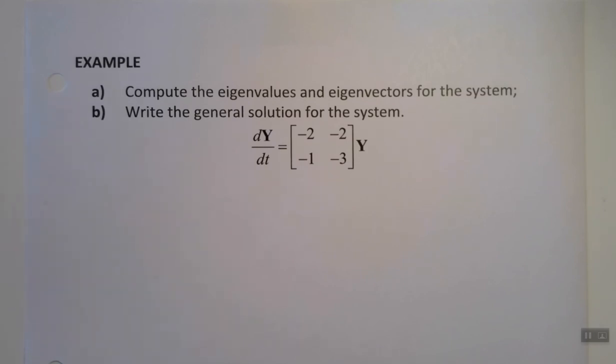At the top it says compute the eigenvalues and eigenvectors for the system, and then write the general solution for the system. Now, we're going to be a little cheeky about this, because you'll notice it doesn't say do it by hand or do it finding the eigenvalues and eigenvectors by hand. So we're going to use Maple.